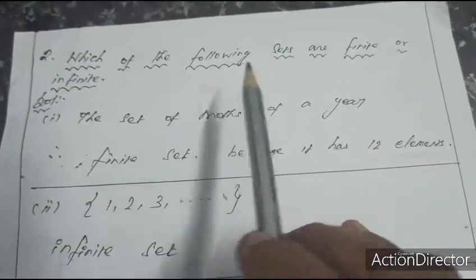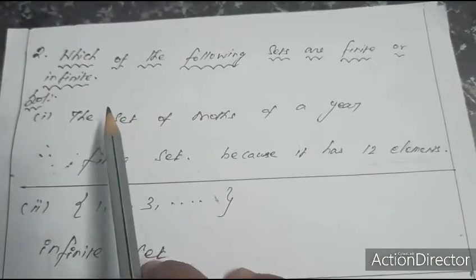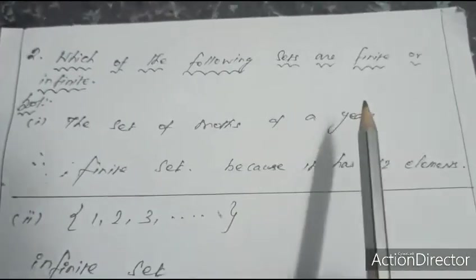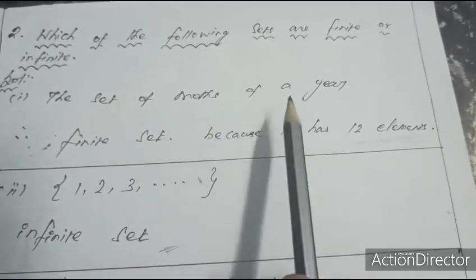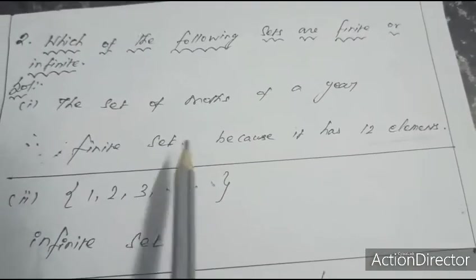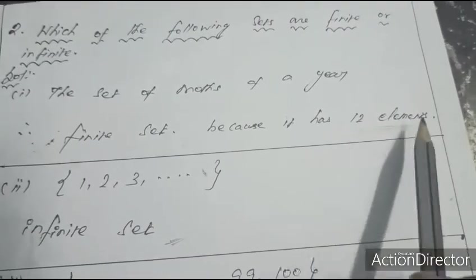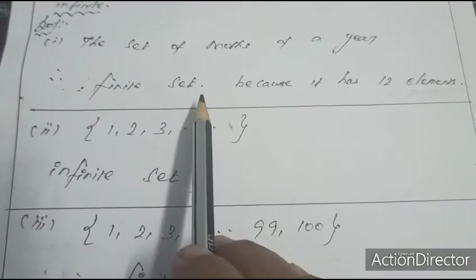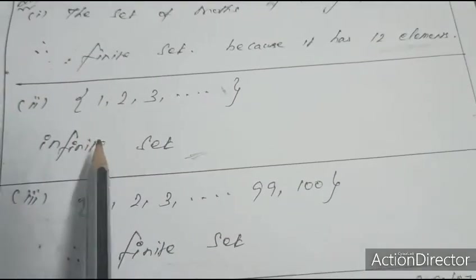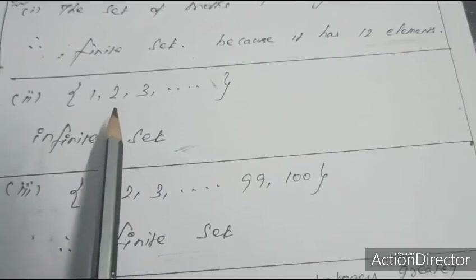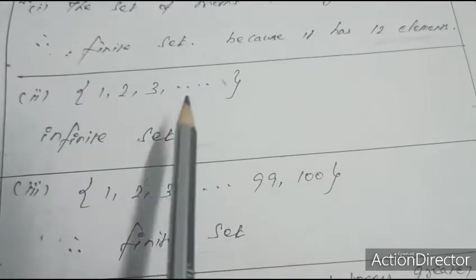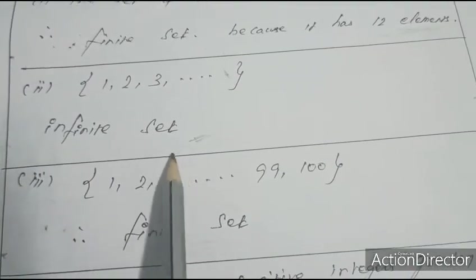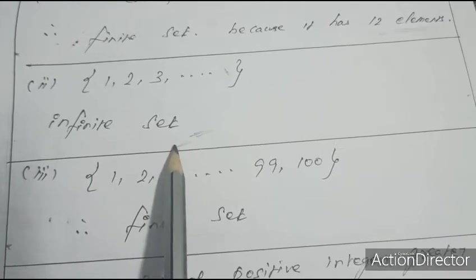Second question: which of the following sets are finite or infinite? First: the set of months of a year — it is a finite set because it has 12 elements, January to December, 12 months only; countable elements, so it is a finite set. Second: {1, 2, 3, ...} — the set of natural numbers; it is uncountable, therefore it is an infinite set.